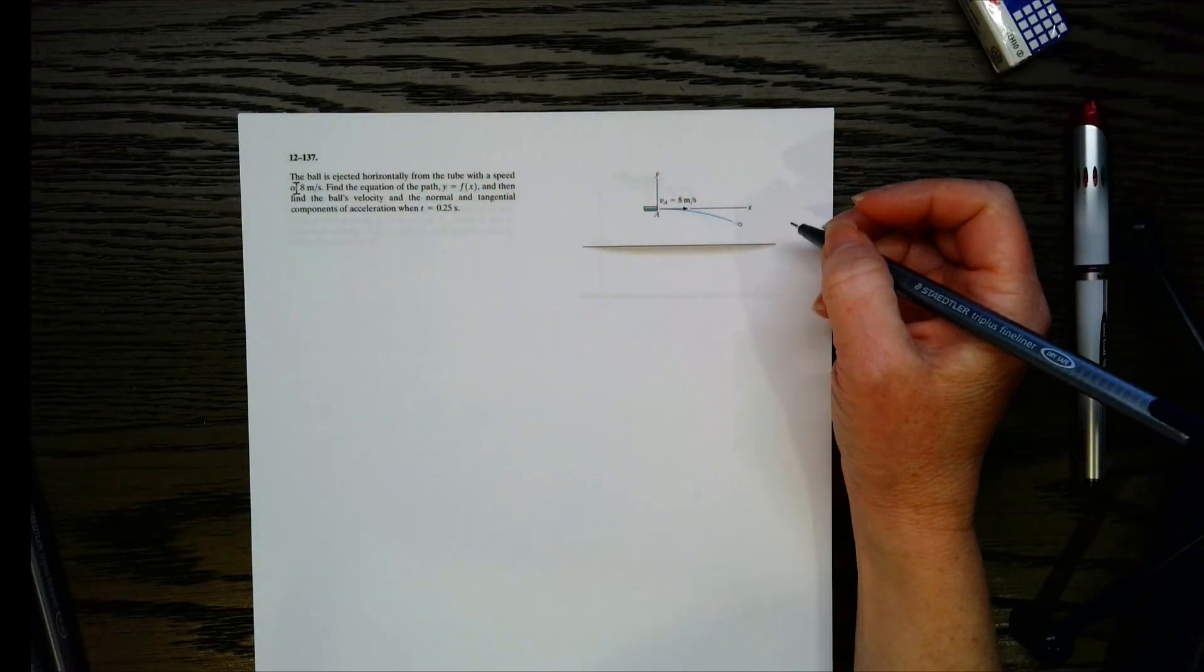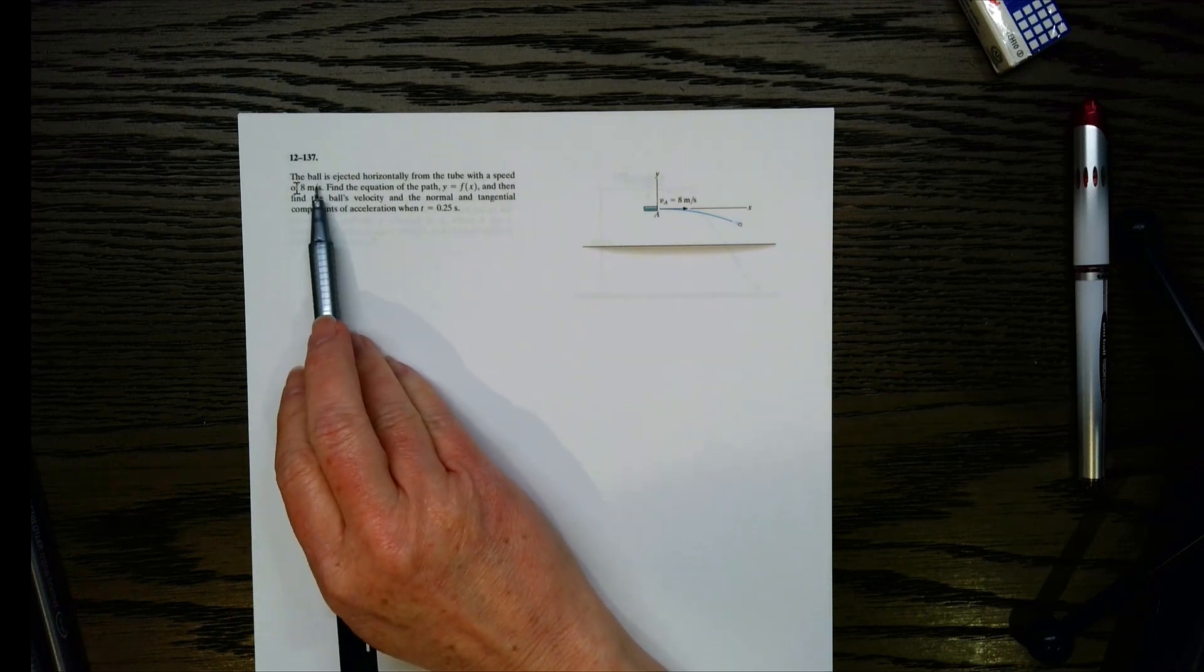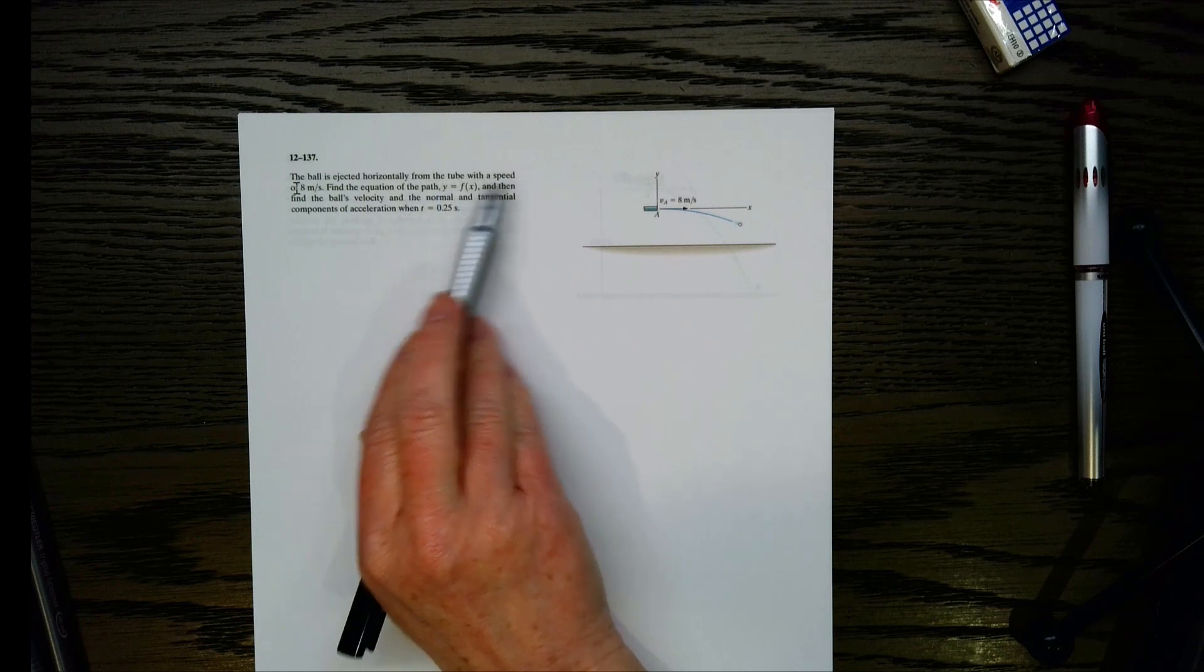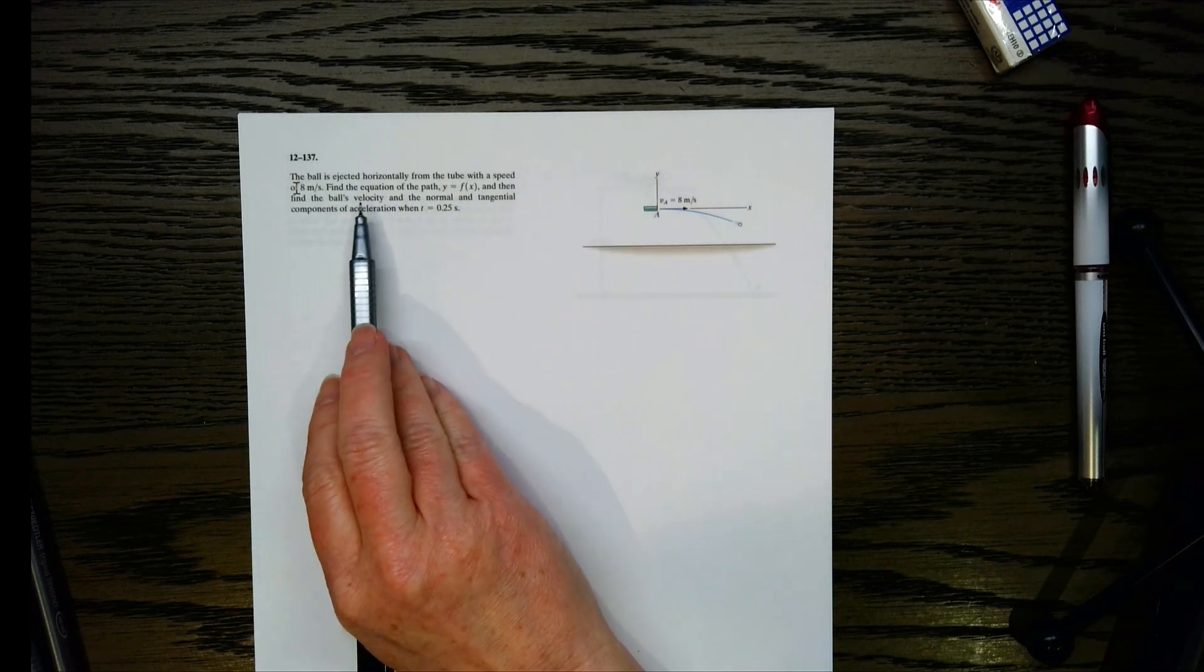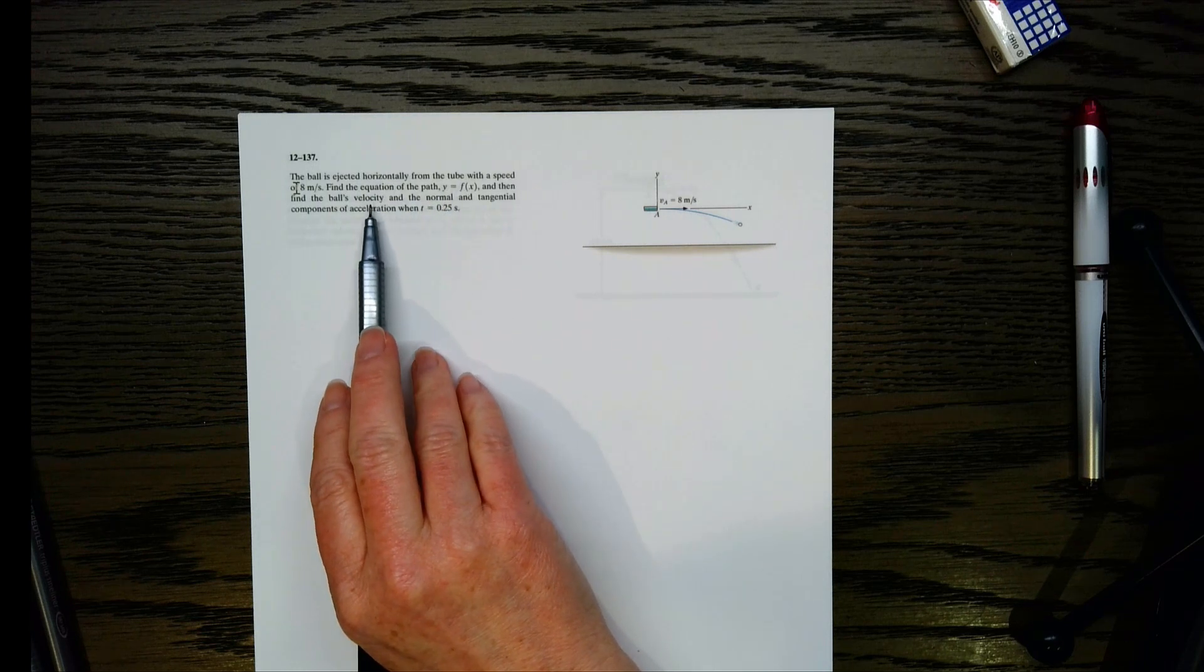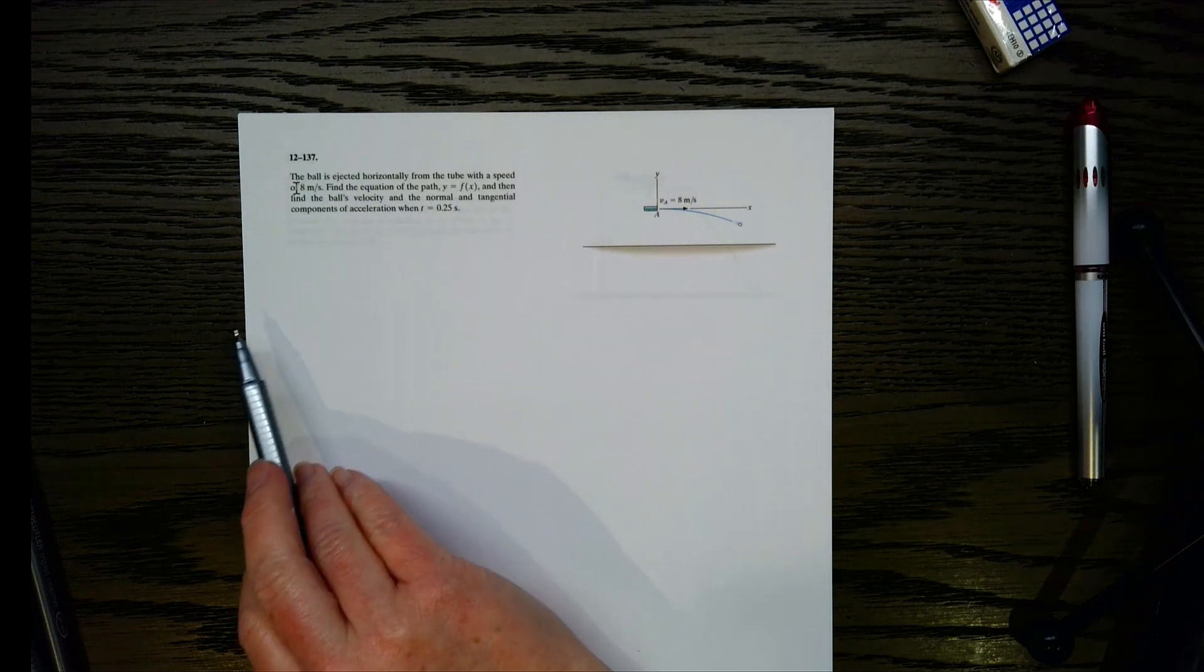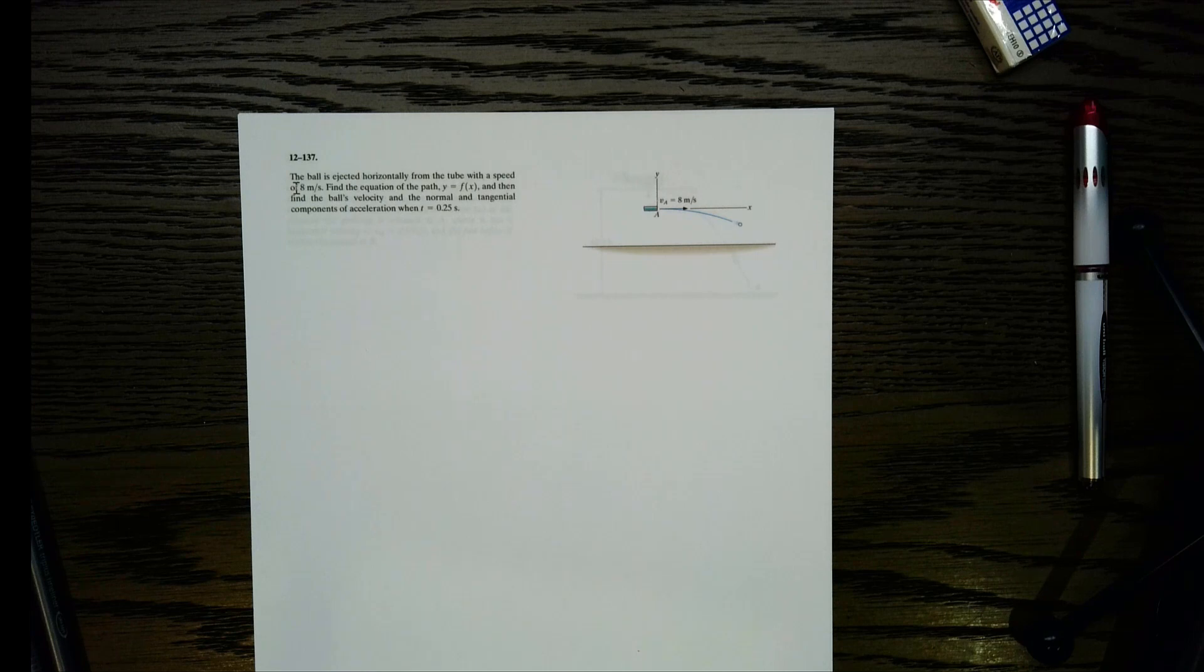Hey guys, this one is from the Hibbler textbook, and I think it's in the 14th and 15th editions. What this one says is we've got a ball that's ejected horizontally from this tube with a speed of 8 meters per second, and then we want to find the equation of the path, y equals f of x, and then find the ball's velocity and the normal and tangential acceleration components when t is 0.25 seconds.